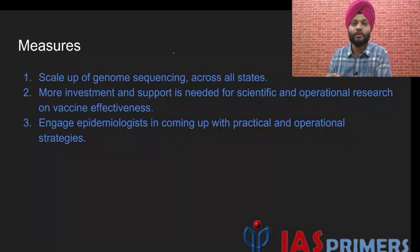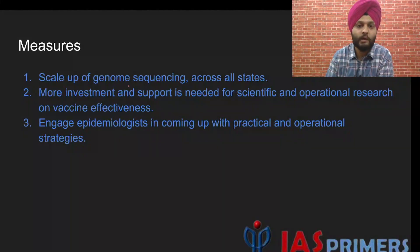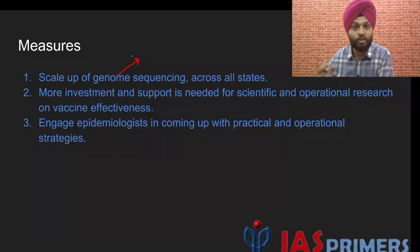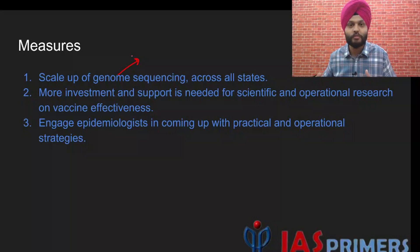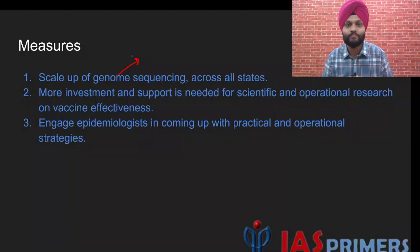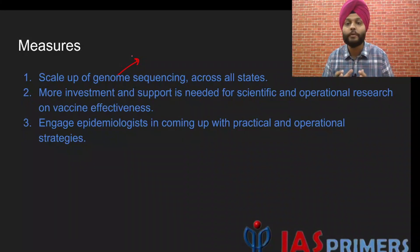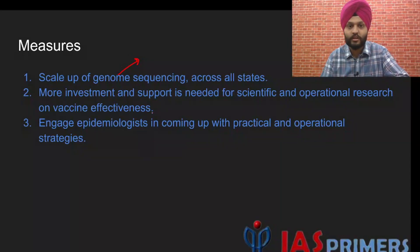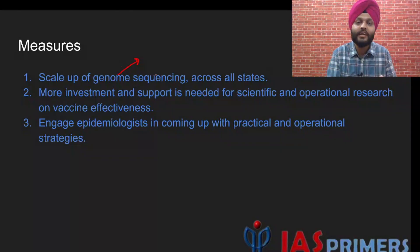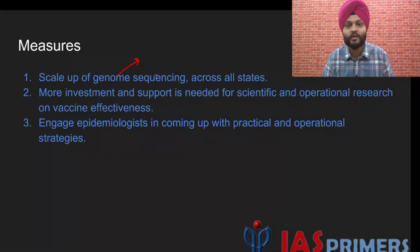Now coming to the measures the government can take. One, they need to scale up genome sequencing across all states — and for this, funding has to be provided along with import relaxation, since it is not possible to manufacture everything in India. Secondly, more investment and support is needed for scientific and operational research on vaccine effectiveness — tracking variants by genomic sequencing and studying vaccine effectiveness vis-à-vis the various variants.